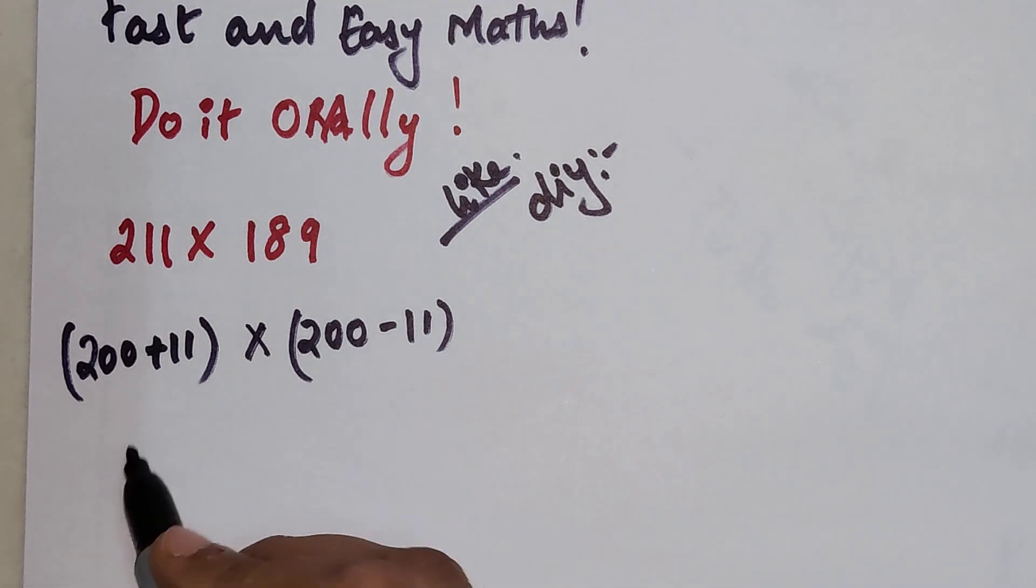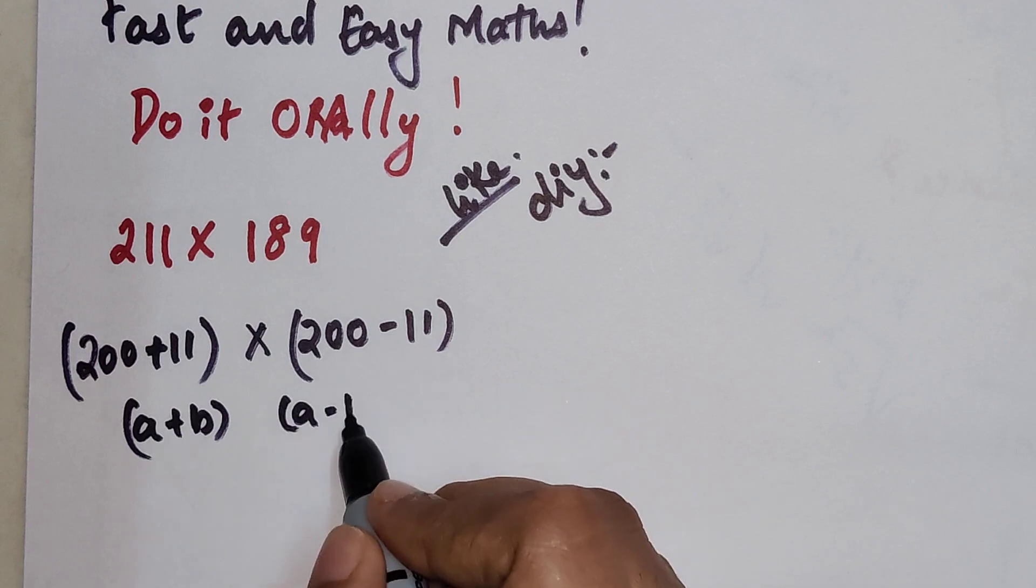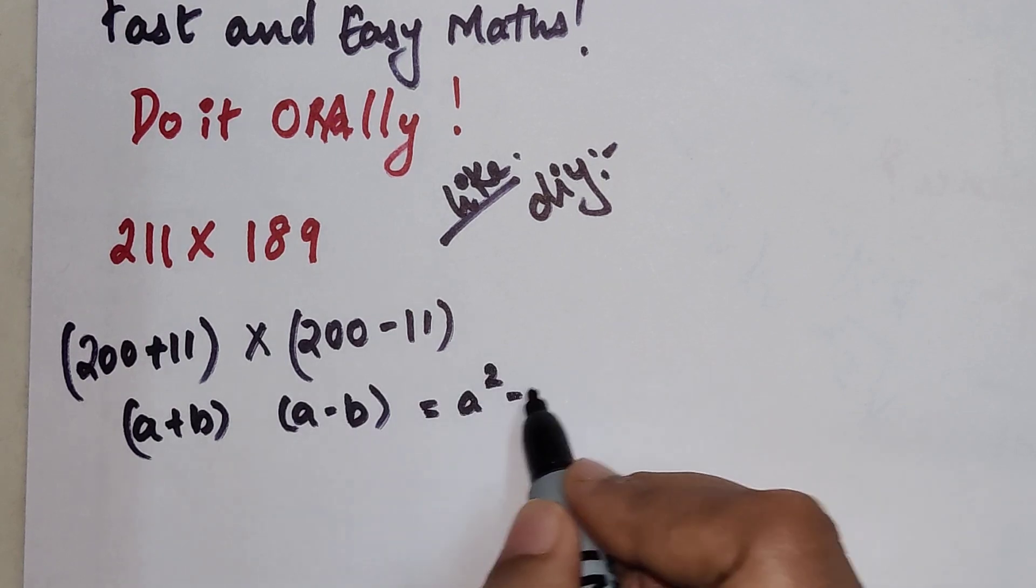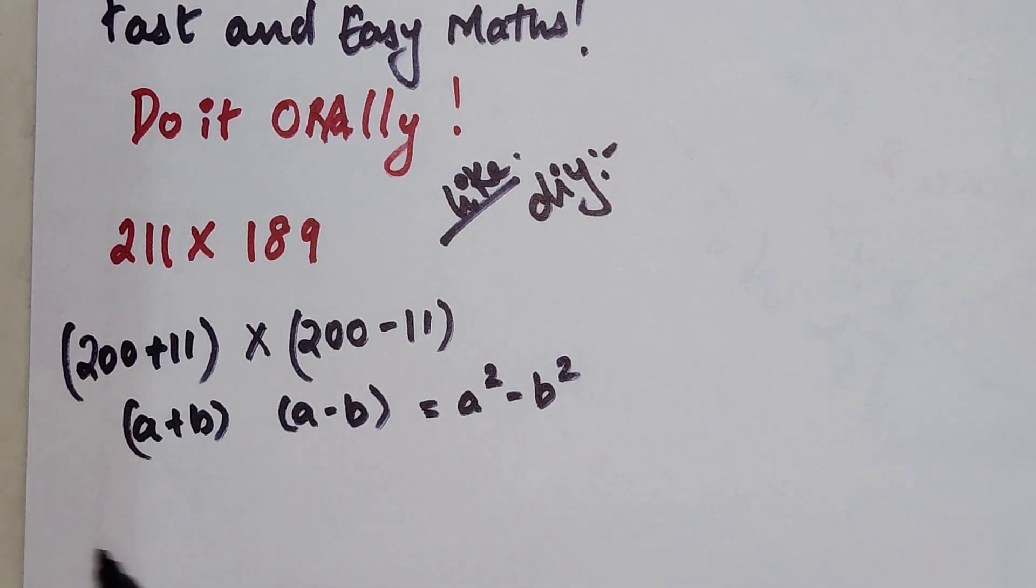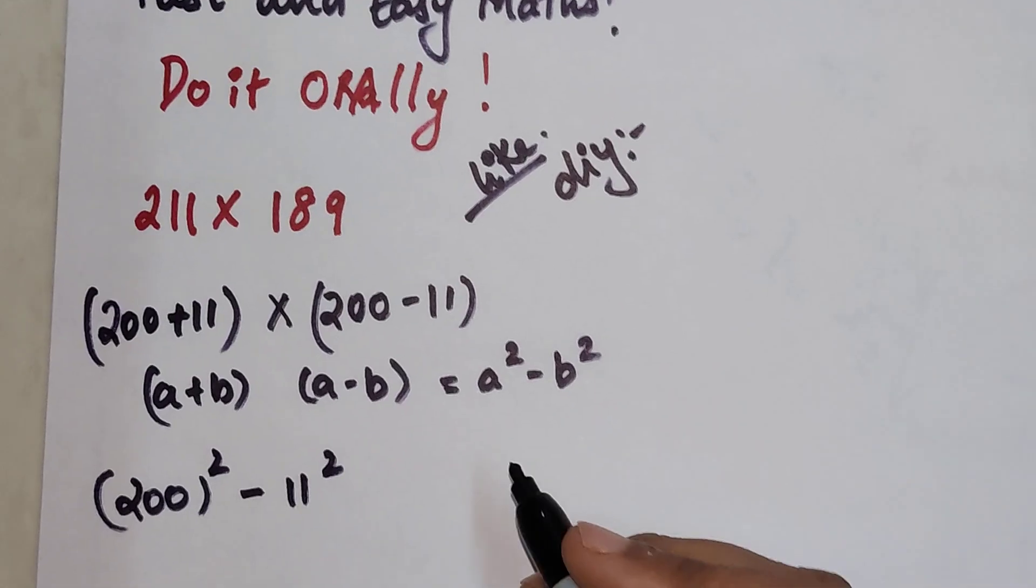So now this is basically of the form a plus b into a minus b, which is nothing but a square minus b square. So we need to do 200 square minus 11 square.